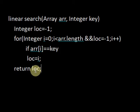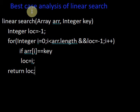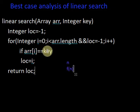There are three cases of analyzing an algorithm: the best case, worst case, and average case. First let's perform the best case analysis of linear search. If n is the size of the input, what is f(n), the running time or time complexity of linear search in its best case? The best case is the scenario in which the minimum number of operations are executed — when some particular type of input is provided, the algorithm shows its best behavior, and the time complexity corresponding to it is called the best case time complexity.